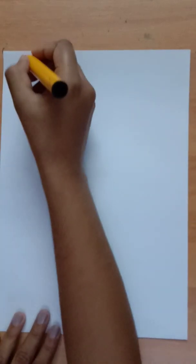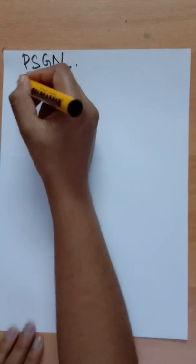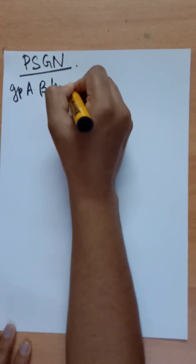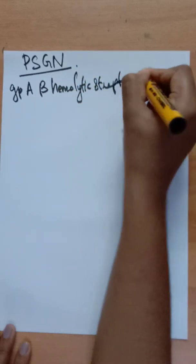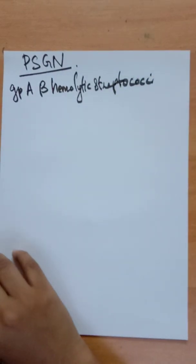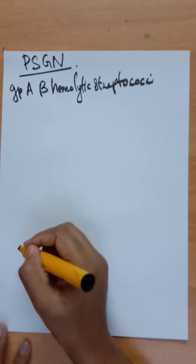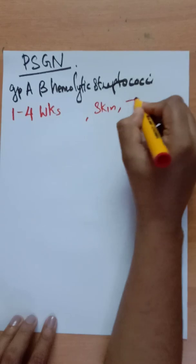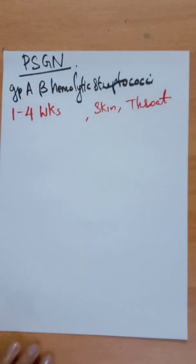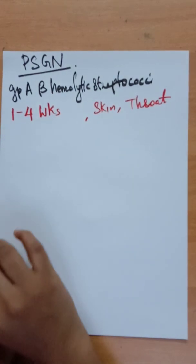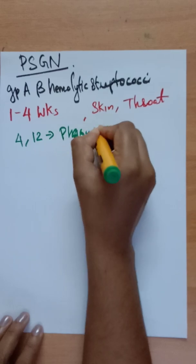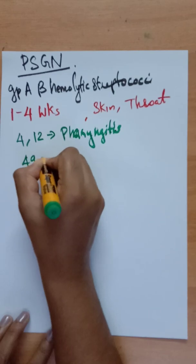Post-streptococcal glomerulonephritis is the most common form. It is acute glomerulonephritis following infection by group A beta-hemolytic streptococcus. The streptococcal infection of the throat or skin precedes the onset of nephritis by 1 to 4 weeks. Only a few strains are nephritogenic — types 4 and 12 cause pharyngitis, and types 4 and 49 cause skin infections.